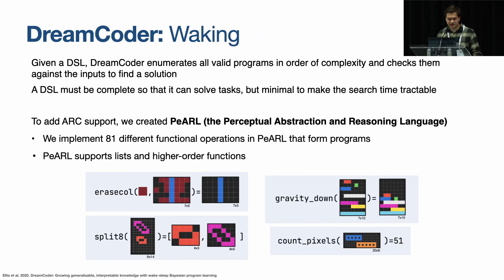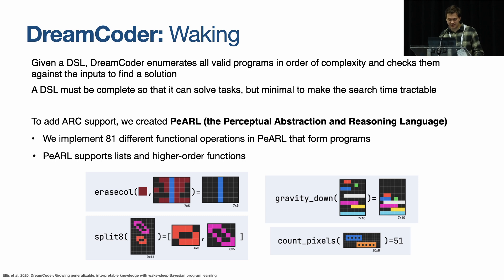In the waking phase — the program induction step — it starts as literally brute force search. We have a domain-specific language; it would be intractable to enumerate Python, for example. So we enumerate all possible programs in order of complexity and check them against the task. If we find one that matches the training examples, we submit it. We need a DSL where solutions to ARC tasks are as short as possible, and at the same time sufficiently general to solve tasks we've never seen before. For ARC, we built one with a nice acronym called PEARL — basically a world-type language with 81 different primitives useful for ARC, largely inspired by previous handcrafted work. Examples include colour manipulation, splitting objects and performing operations on them, and counting pixels.